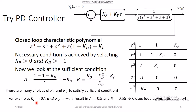With Kp = 0.1 and Kd = −0.5, all first-column determinants are positive and all coefficients are positive — both conditions of Routh-Hurwitz criteria are met. We have closed loop asymptotic stability. The final controller is C(s) = 0.1 − 0.5s, and this will achieve closed loop stability with this plant.